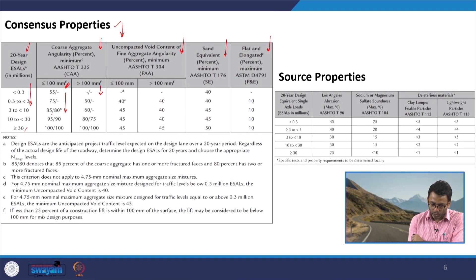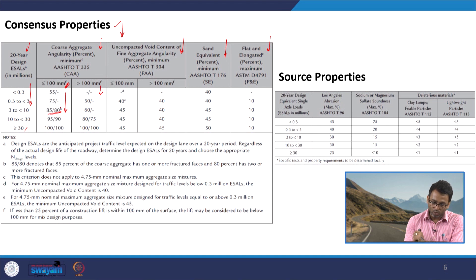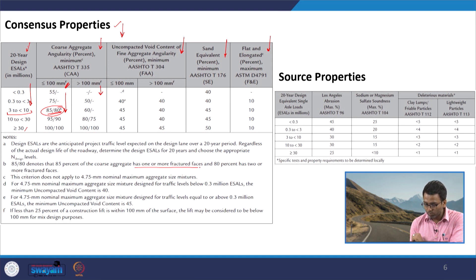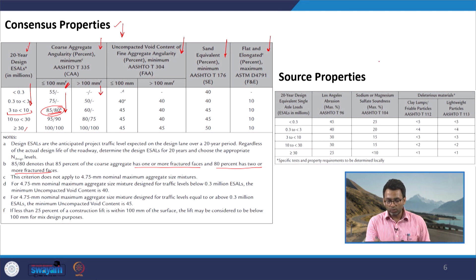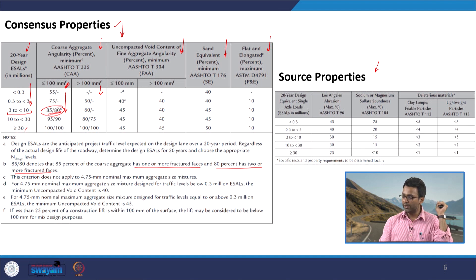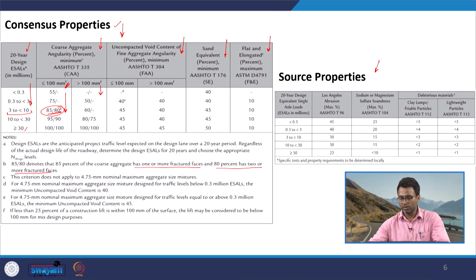The logic is that materials in the upper layers are subjected to higher stress levels and should be of superior quality compared to materials at lower depths. For example, aggregates used at a depth of 50 mm should have a coarse aggregate angularity of 85/80 when design traffic is in the range of 3 to 10 MSA — meaning 85 percent of coarse aggregate has one or more fractured faces, while 80 percent has two or more fractured faces. Source properties include Los Angeles abrasion, sodium or magnesium sulphate soundness, and deleterious materials including clay lumps, friable particles, and light fit particles.